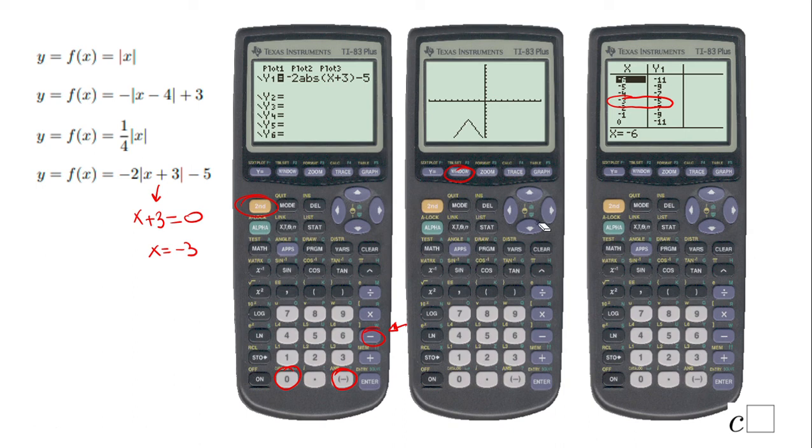That is about graphing using this TI calculator, these absolute value functions. Do not forget, to get the absolute value, you have to get second zero, and then the first thing is the absolute value function. If you enjoyed this video clip, don't forget to click the like button and come back at C-square for more help. Thank you.